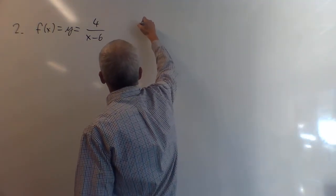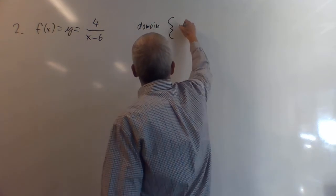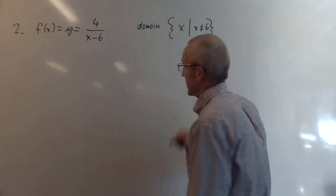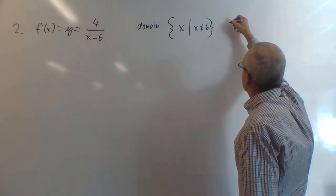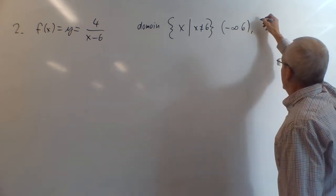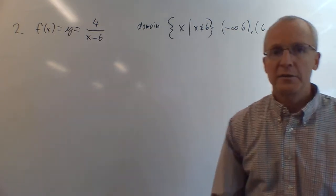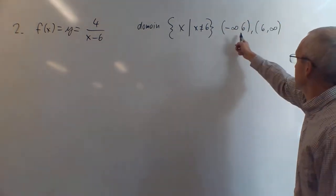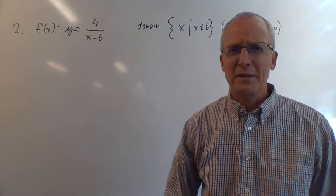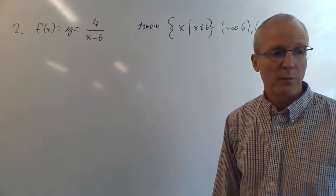We can write the domain as: x ≠ 6, or in interval notation (-∞, 6) ∪ (6, ∞). Make sure to use parentheses everywhere — you can't include infinity, and you can't include 6. You could also use inequality notation, though it's easy to get the signs wrong.